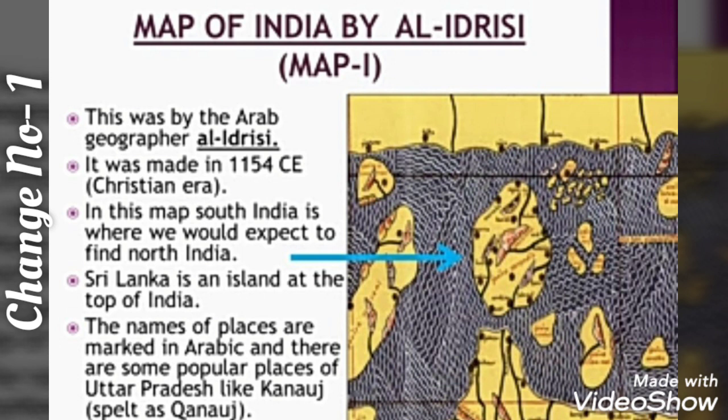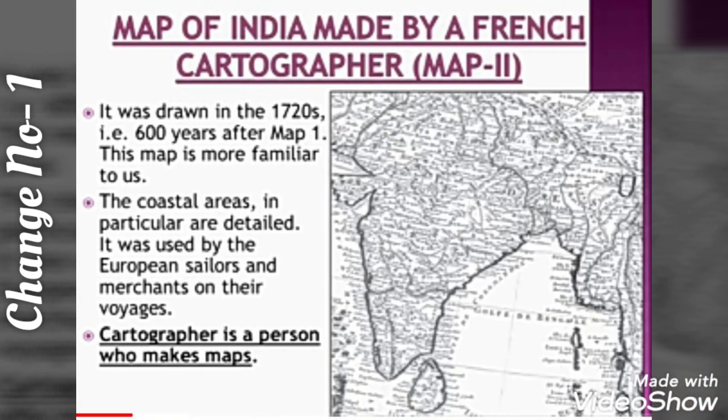You can also refer to your textbook. Look at the third point given here. In this map, South India is where we would expect to find North India. Do you find anything interesting? Yes — these maps were upside down. That means Sri Lanka is at the top and India is at the bottom. But after al-Idrissi, a French geographer came in the 1720s, that means 600 years after the first map. This map is more familiar to us — you can see it is just like our present map of India, with India at the top and Sri Lanka at the bottom.